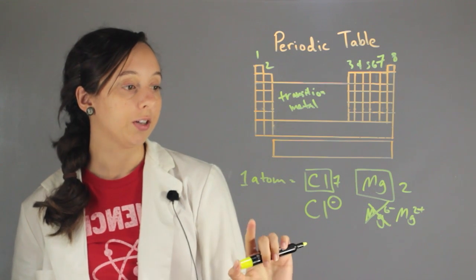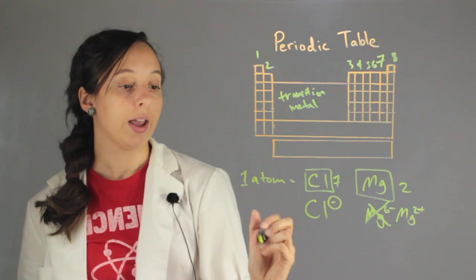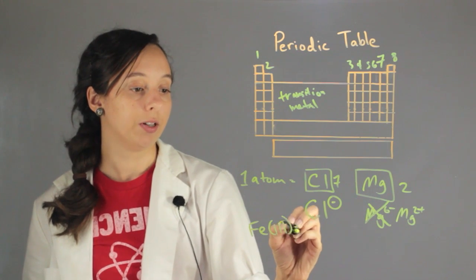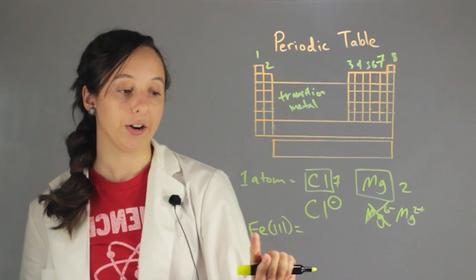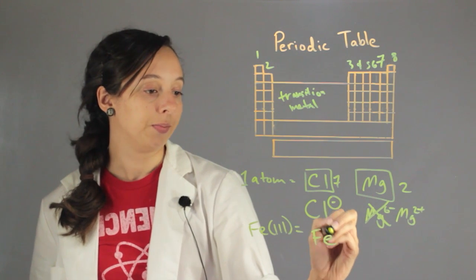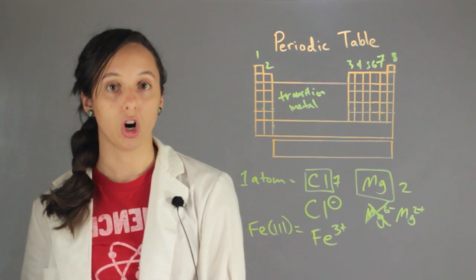So another type of ion is a transition metal. And these are a lot easier because they'll just tell you by Roman numerals. So if you ever see this, iron with a little three in parentheses, this means that you have an iron atom with a three plus charge.